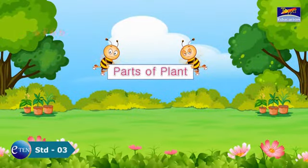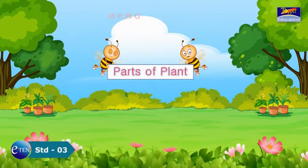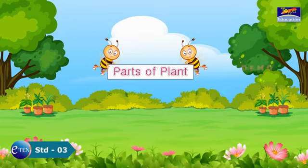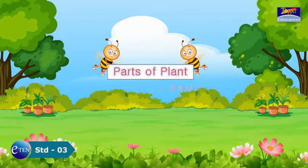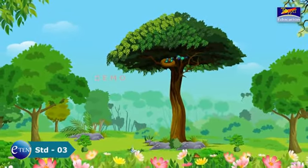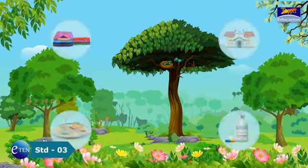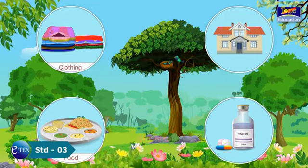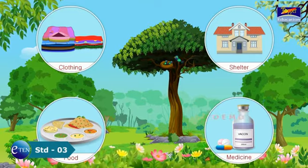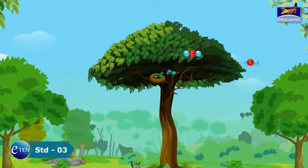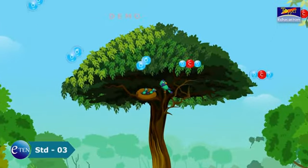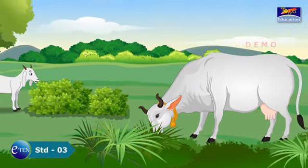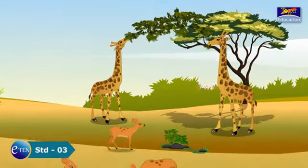Parts of Plant. Hello children, have you ever noticed the greenery around you? It is because of plants and trees. Today we are going to learn about that in this lesson. Plants play an important role in our lives. We depend on them for our basic needs like food, clothing, shelter and medicine. They breathe in carbon dioxide, clean our environment and release oxygen gas which we need to breathe. Hence, we can say that without plants, life would not be possible on earth.